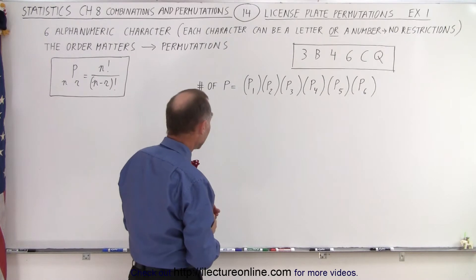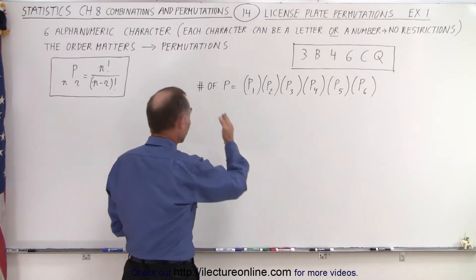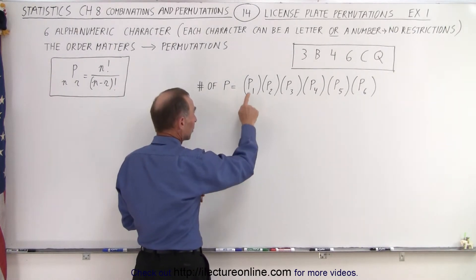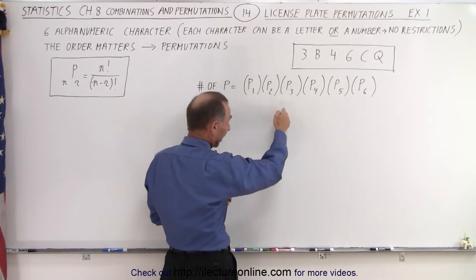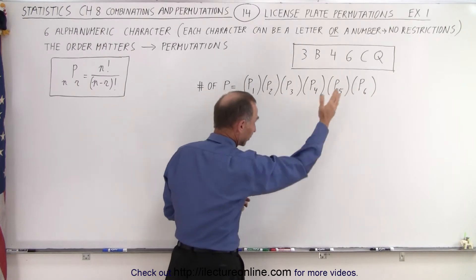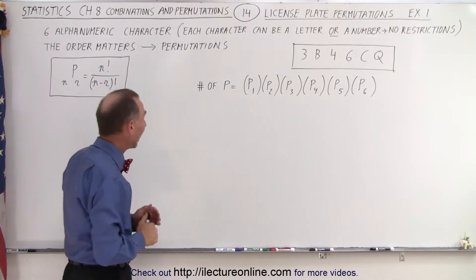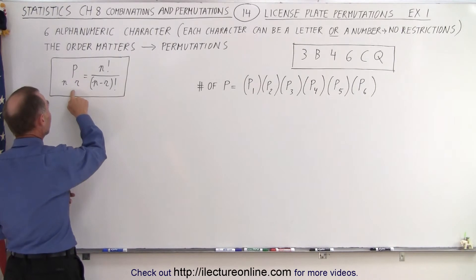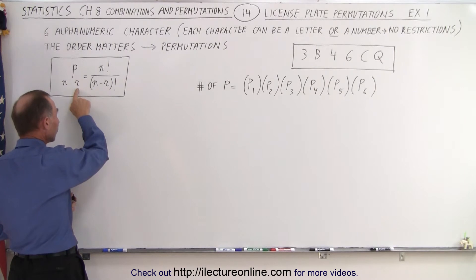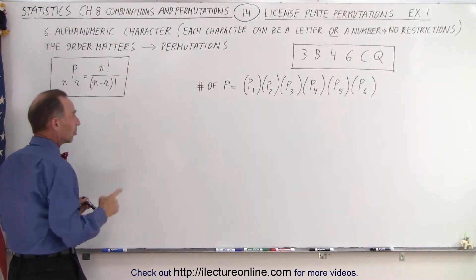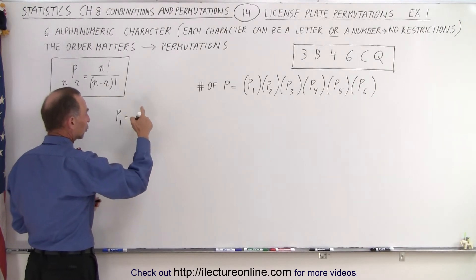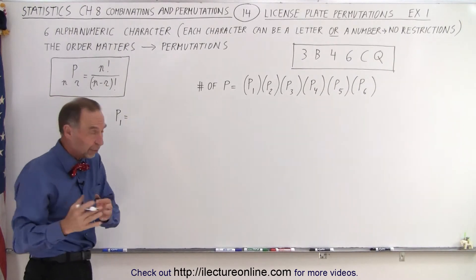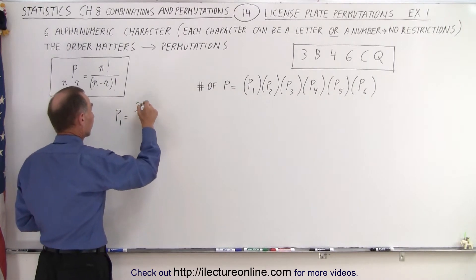Since we have six characters, the number of permutations is going to be the number of permutations for the first character times the second times the third, and so on for all six characters. To find the number of permutations when there are this many possibilities and this many characters, we use a general equation. For P1, that would be equal to n factorial.